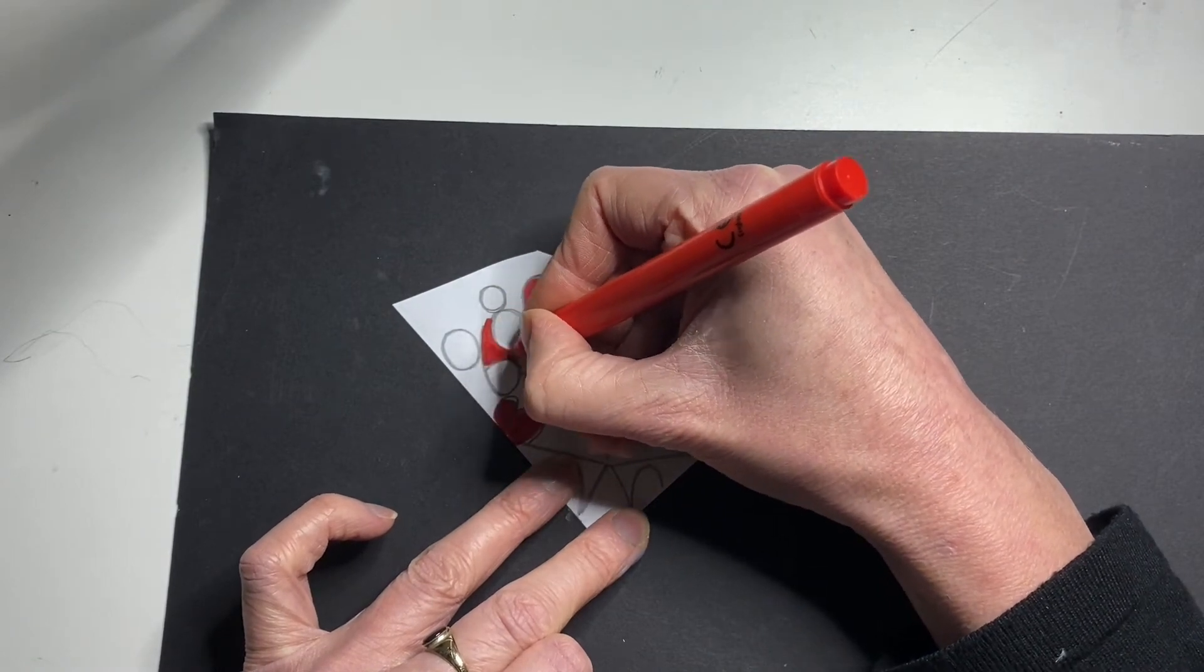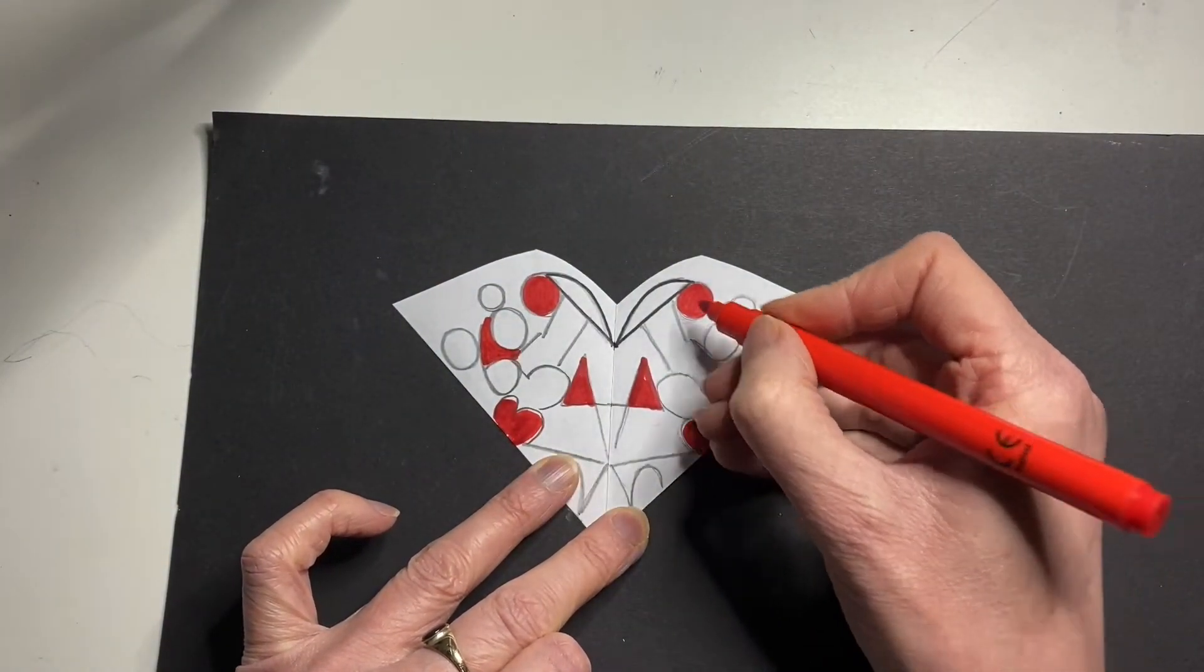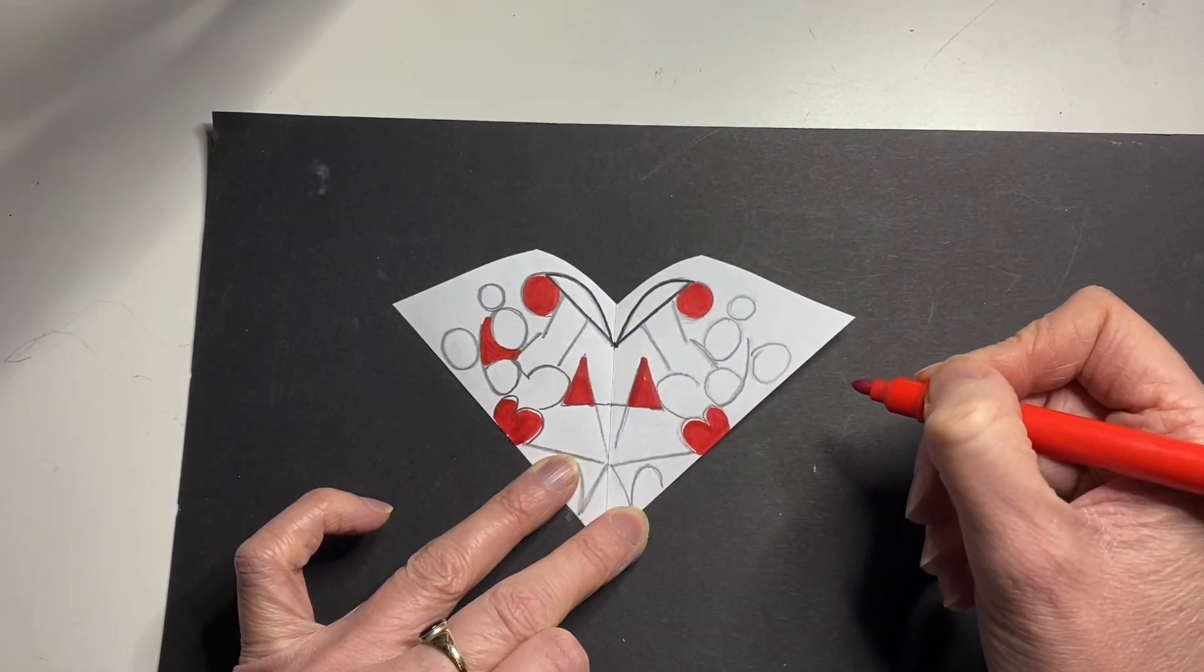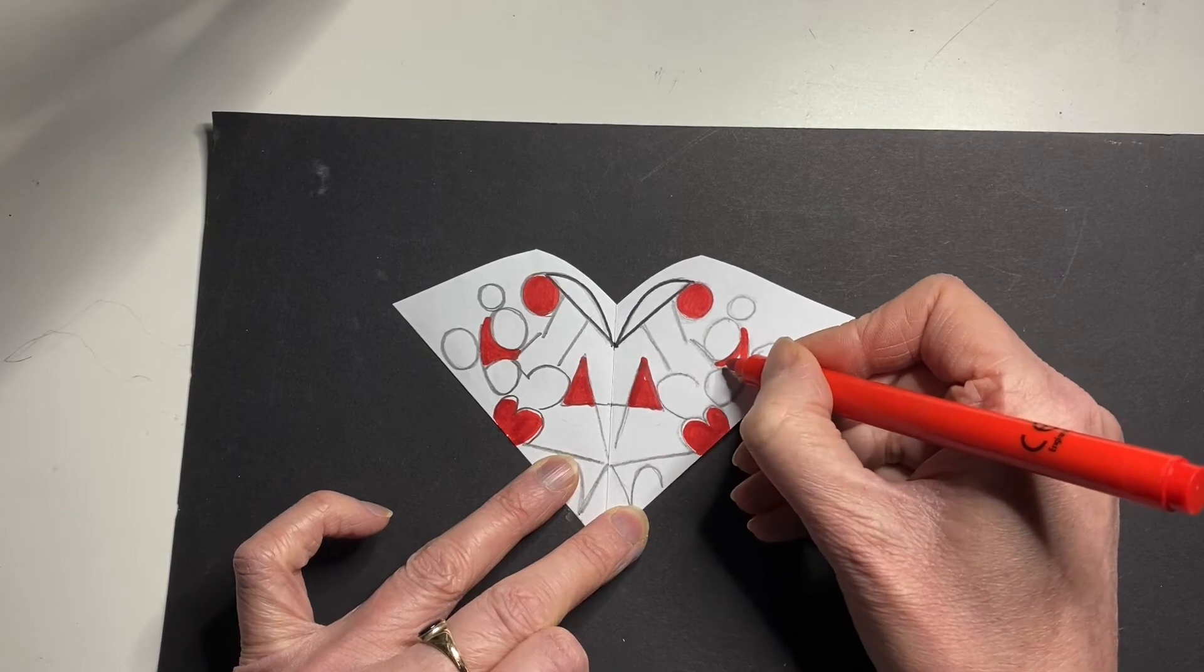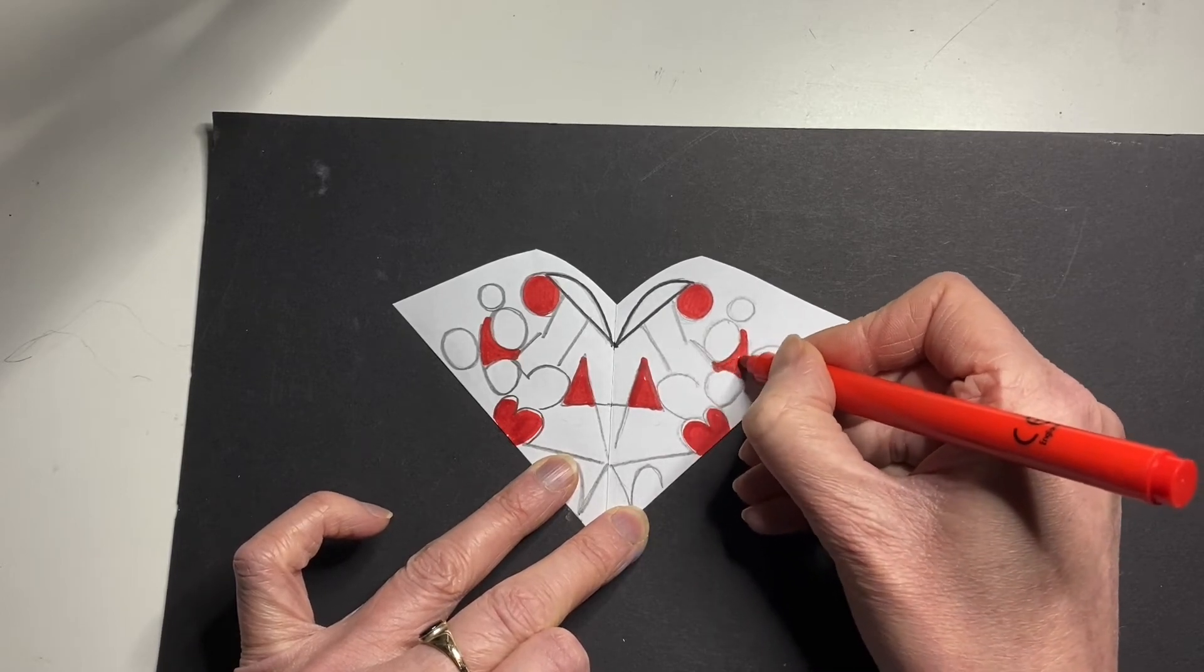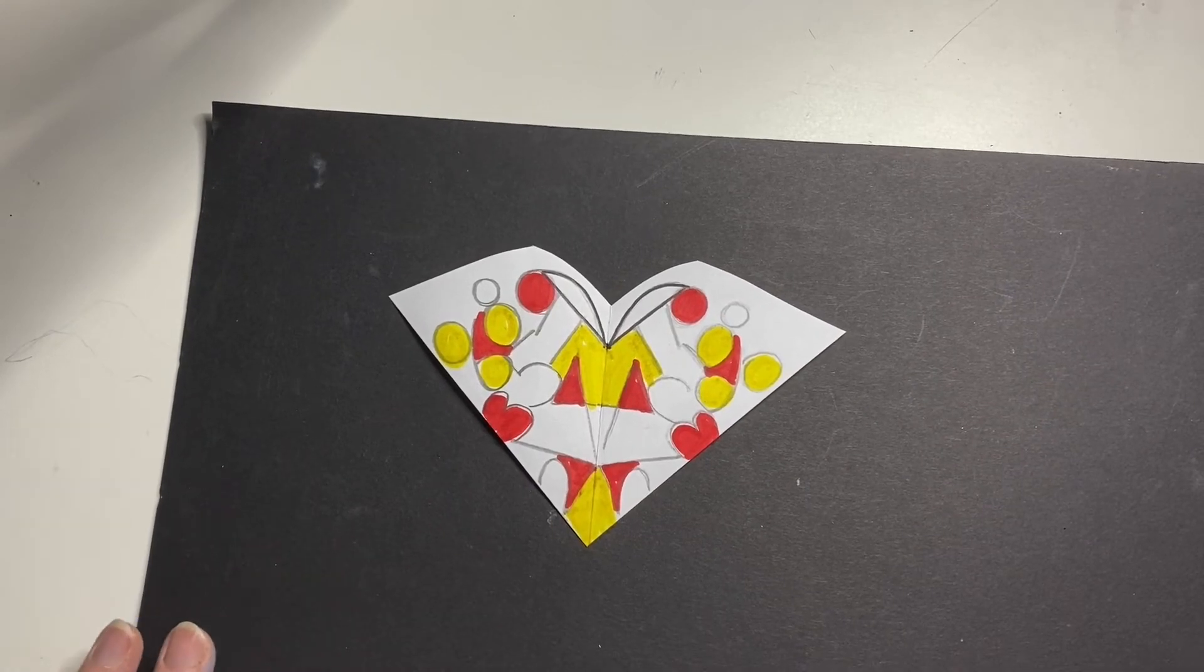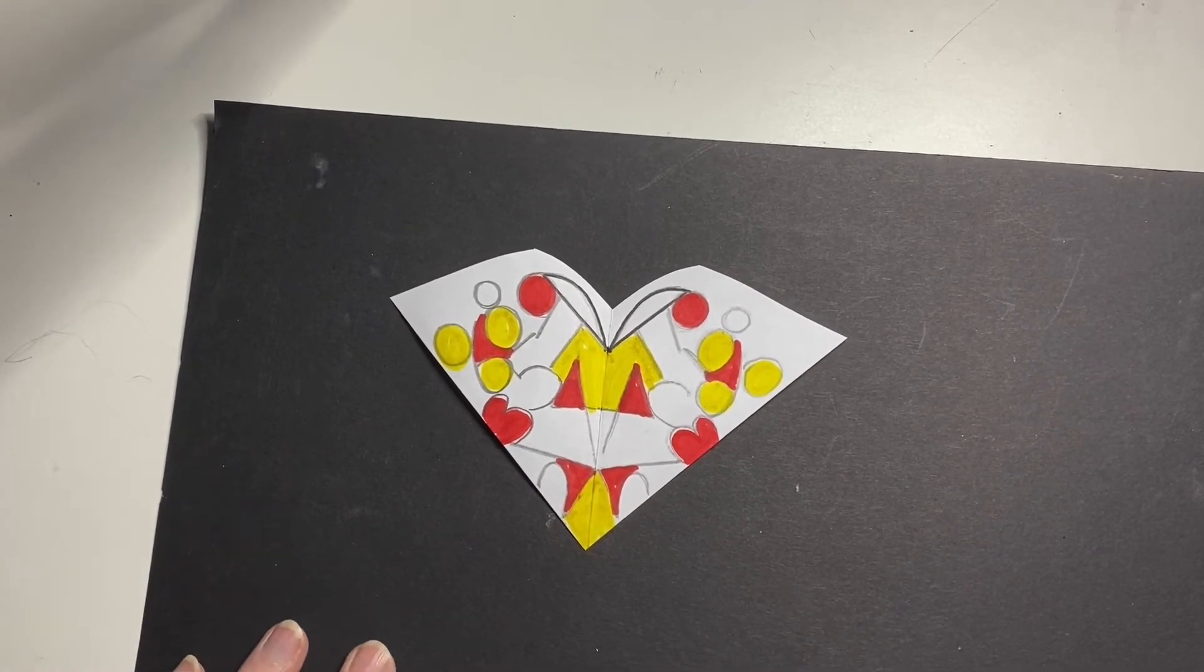Now sometimes I've colored in for example the zero shape or the circular shape within the nine. But here on this between the six and the eight I'm filling in a part of the negative space. So I've gone on to add some colors with the red and the yellow felt tips.